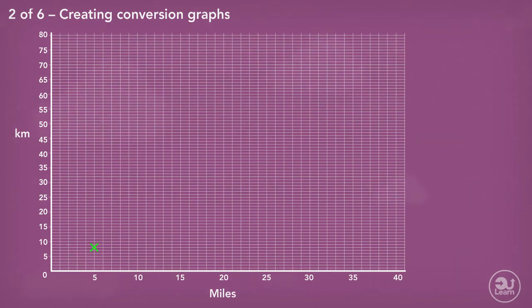What about other points on the conversion line? To answer that question, have a think about this. If you travel zero miles, how far is this in kilometers? Zero miles equals zero kilometers, as you wouldn't have moved. So that would be another point on our graph.